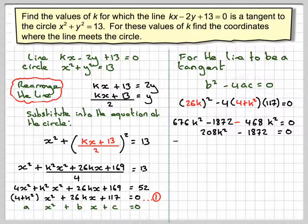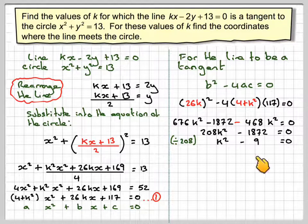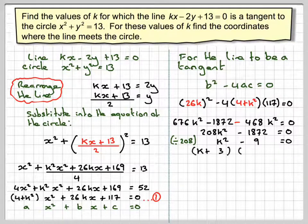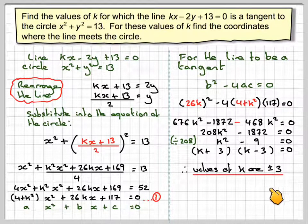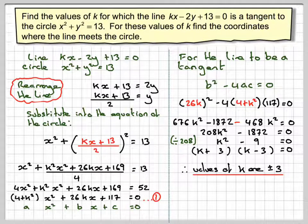These are divisible by 208, so we get k squared minus 9 equals 0, which factorises as (k plus 3)(k minus 3) equals 0. So the values of k are plus or minus 3. That was also shown in the applet.